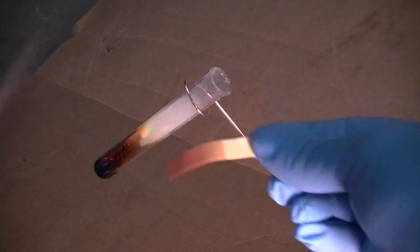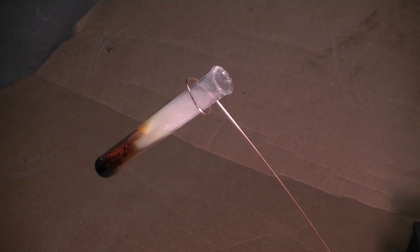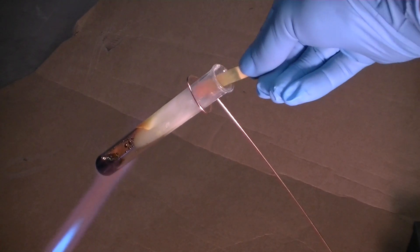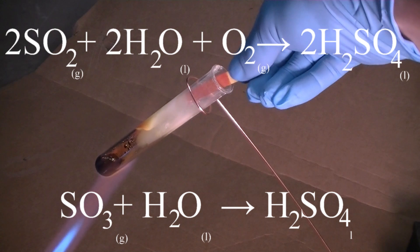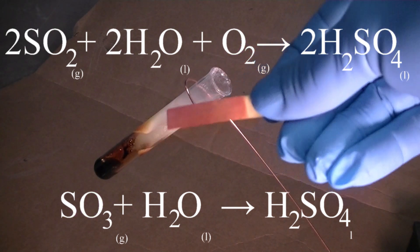As the produced sulfur dioxide and sulfur trioxide gas flows over the moist litmus paper, there is a reaction with the water in the litmus paper forming an acid. The acid which is formed is sulfuric acid, turning the litmus paper red.